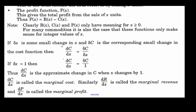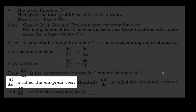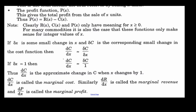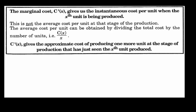If C(x) is the cost, then dC/dx — the derivative — for a small change in X, where delta X equals 1, is just the change in the cost. The derivative is the approximate change in cost when the number of items changes by one — it's called the marginal cost. Similarly, dR/dx is the marginal revenue and dP/dx is the marginal profit.